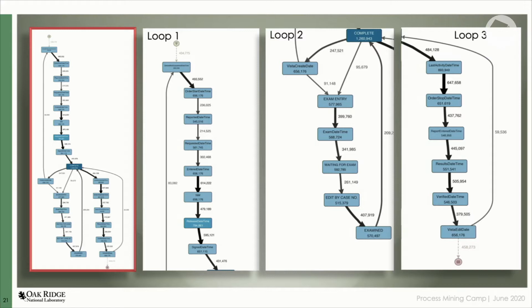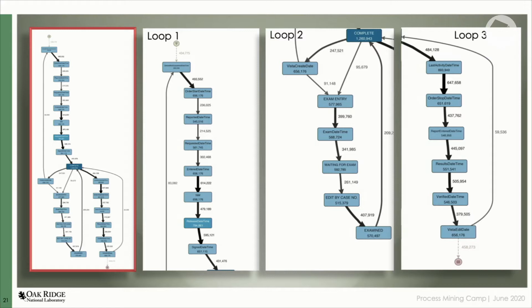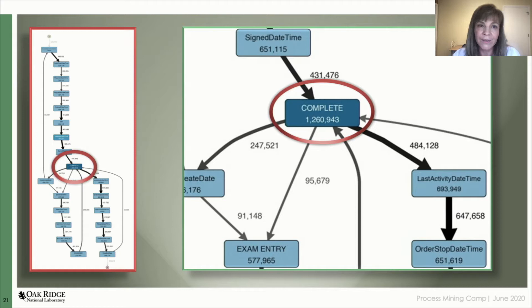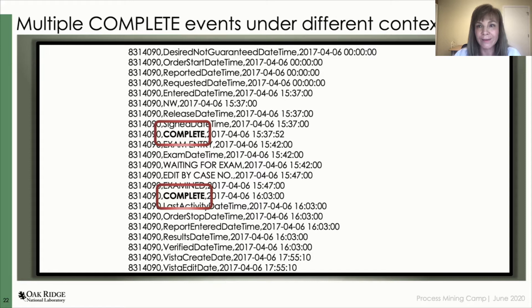The resulting process map with zero paths is still complex — activities seem to move in three main cycles joined by the 'complete' status. We can see the process map has multiple 'complete' activities. This repeating activity in multiple contexts throughout the process creates false loops that are not actually loops — a lack of specificity in the activity names creates a spider-like mass of activities. We wondered: is this the 'complete' of the radiology exam status column, or the 'complete' from the radiology nuclear medicine order table? We didn't know there were multiple activity values with the same name in different contexts. It is important to clearly identify each activity with a unique name to avoid creation of false loops.